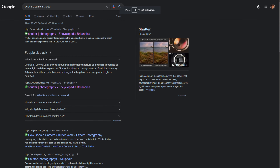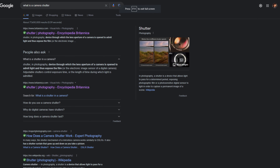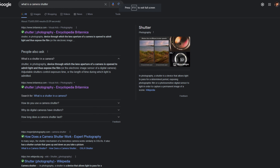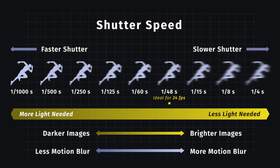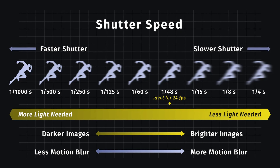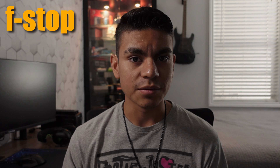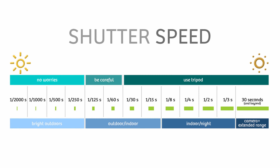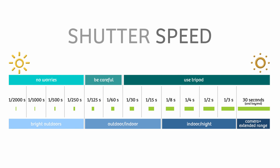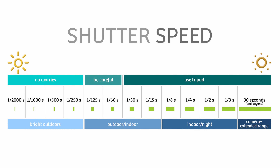What is a shutter? It is like a curtain that opens and closes at different speeds. This controls the amount of light that you let into your exposure of film or your digital camera sensor. A faster shutter speed will allow less light, where a slower shutter speed will allow more light.